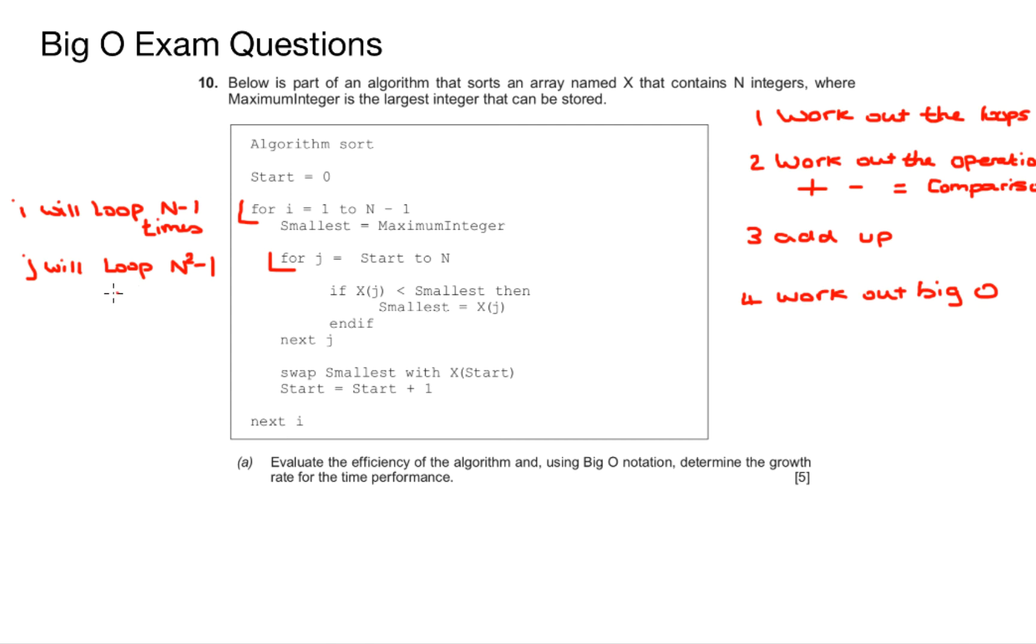So once I've worked out the loops, the second step is to work out the operations, and it's important that you read the question here because some questions would specify which operations or calculations you would be looking for. I've noticed I have two operations in the i loop itself. Now it's important here to look at the indentation of the code itself.